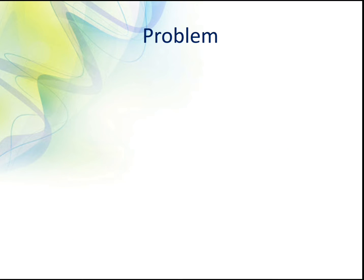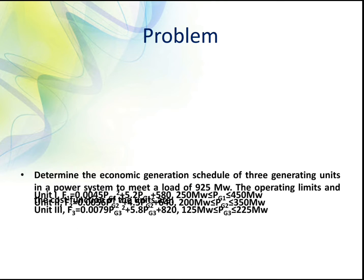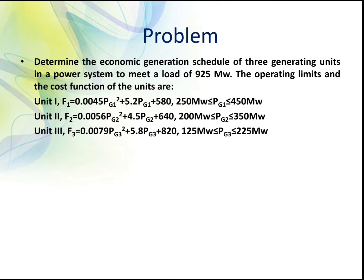Now let us solve a simple problem so that we will be able to understand the economic dispatch problem better. We are considering a three-unit system — units 1, 2, and 3 — which have cost functions F1, F2, and F3, and also have minimum and maximum limits. We have to determine the economic generation schedule of the three units to meet a load of 925 megawatt.